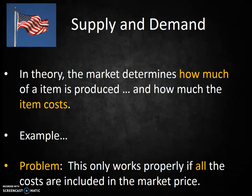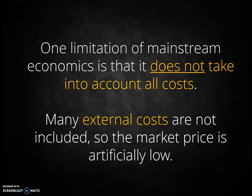Now, in the real world, companies don't forget to include costs into the market price. But they do sometimes intentionally or unintentionally shift costs to other people outside of the transaction. When these costs are shifted, the price is lower, and more of the product is sold than would be sold if the market were functioning properly. Indeed, one limitation of mainstream economics is that it does not take into account all costs. Many external costs are not included, so the market price is artificially low.